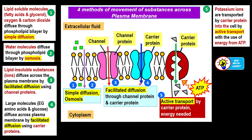For bigger molecules, they use the carrier protein to move through the plasma membrane. The carrier protein can change shape — unlike the channel protein, which cannot. The carrier protein changes shape to transport large molecules from a region of higher concentration outside the cell to a region of lower concentration inside the cell. Molecules transported this way include large molecules such as amino acids and glucose, which diffuse across the plasma membrane by facilitated diffusion using carrier proteins.